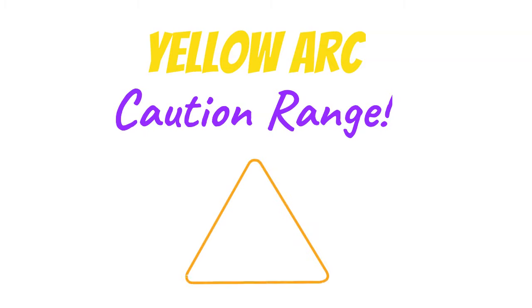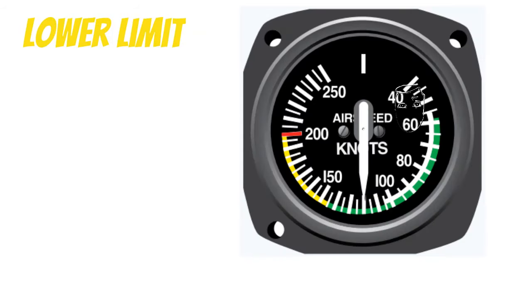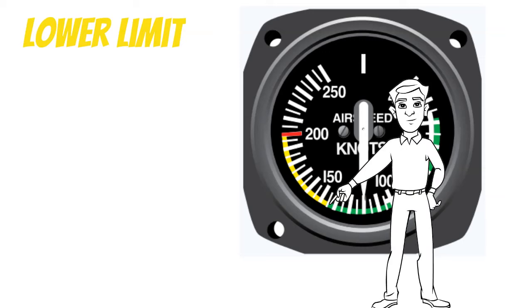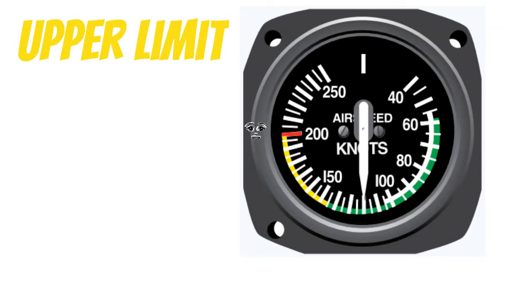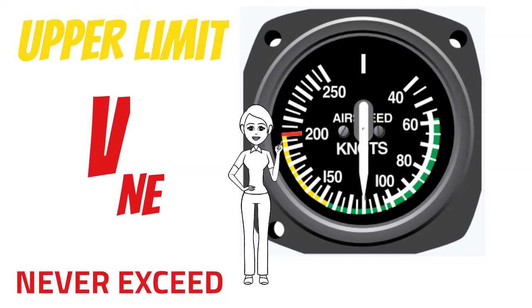Now let's look at the yellow arc, also known as the caution range. Only fly in this range in smooth air and proceed with caution. The lower limit of the yellow arc is also VNO — our normal operating speed — and remember we only fly in the yellow arc in smooth air. At the upper limit of the yellow arc, we have a red line indicating VNE, which means never exceed. Operating above VNE, even in smooth air, can result in structural damage or structural failure of your airplane.